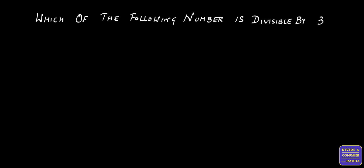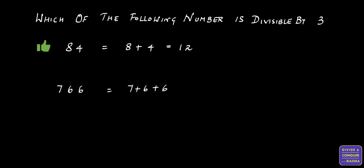Now let's check which of the following numbers is divisible by 3. 84. The sum of the digits is equal to 12. 12 is divisible by 3. Therefore, the given number is divisible by 3. Moving on to the next number, we have 766. The sum of the digits 7 plus 6 plus 6 is equal to 19. 19 is not divisible by 3. Therefore, the number 766 is not divisible by 3.